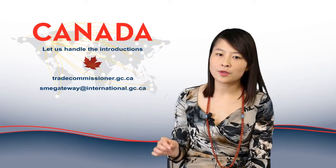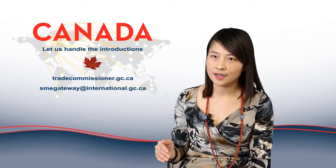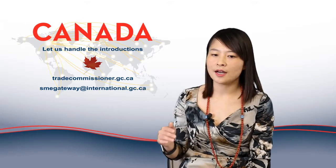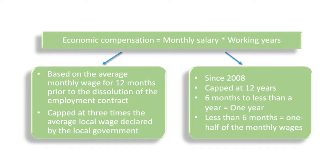If the employee's salary is higher than three times the average monthly salary declared by the local people's government, then the compensation is capped at three times the monthly average salary for no more than 12 years of work.